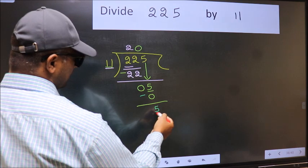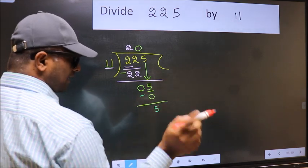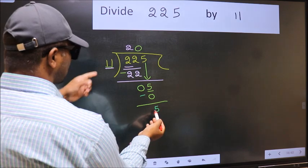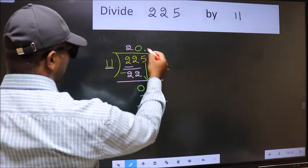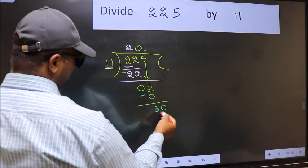Over here, we did not bring any number down, and 5 is smaller than 11. So now you can put dot and take 0. So 50.